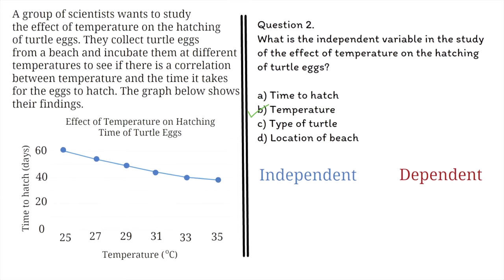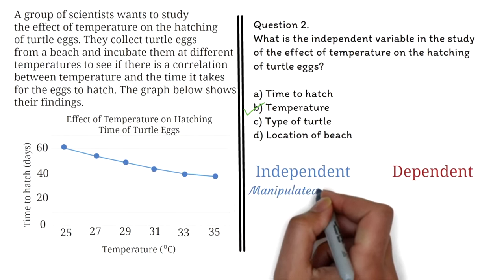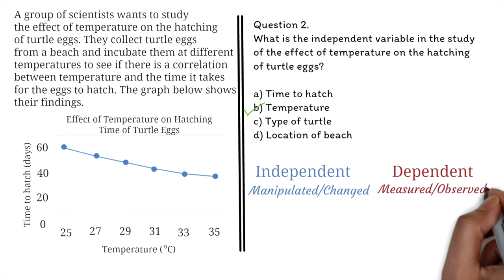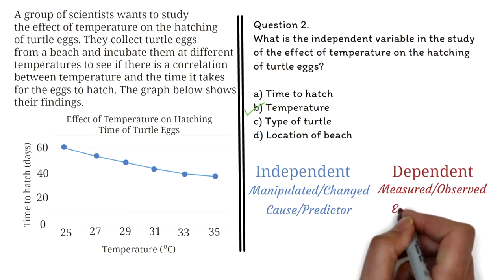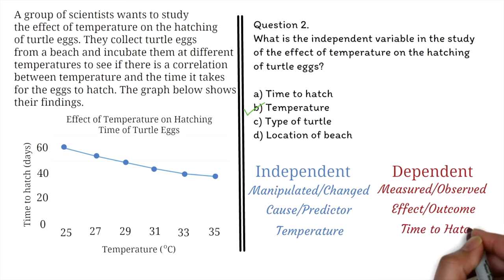Independent variables and dependent variables are two types of variables used in scientific investigations. The independent variable is the variable that is manipulated or changed by the experimenter to observe its effect on the dependent variable. The dependent variable is the variable that is being measured or observed and is affected by the independent variable. In the study of the effect of temperature on the hatching of turtle eggs, the independent variable is the temperature, which is being manipulated by the experimenter, while the dependent variable is the time it takes for the eggs to hatch. The experimenter is interested in observing how changes in temperature affect changes in time to hatch.